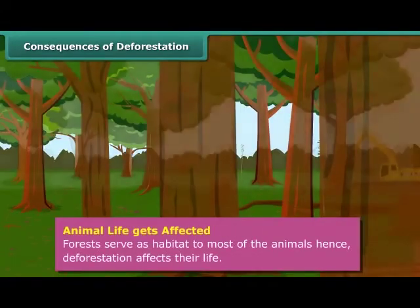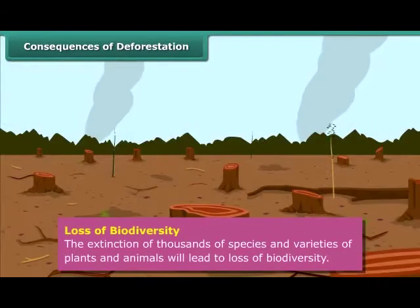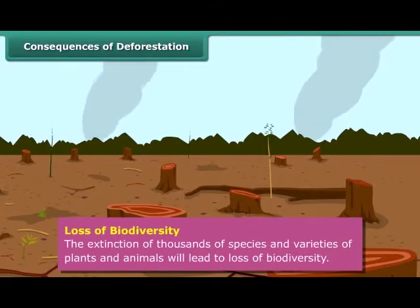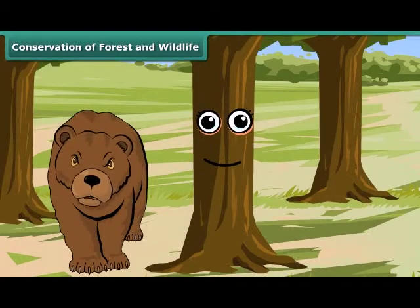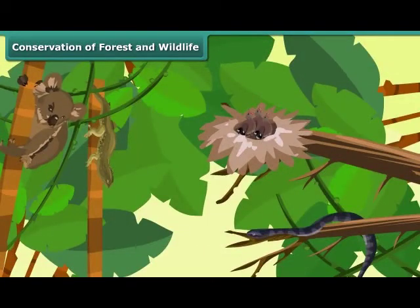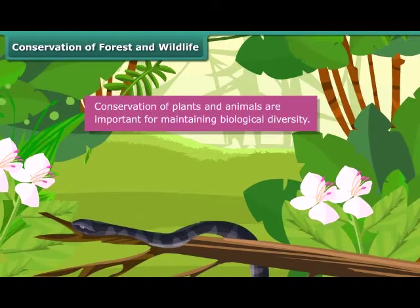Animals' life gets affected. Deforestation also affects animal life since forests serve as habitat to most of them. Loss of biodiversity: cutting a forest means the extinction of thousands of species and varieties of plants and animals, many of which have never been catalogued scientifically. Plants and animals are needed for the sustained development of the Earth. Conservation of plants and animals is important for maintaining biological diversity, which is needed for the survival of humans.